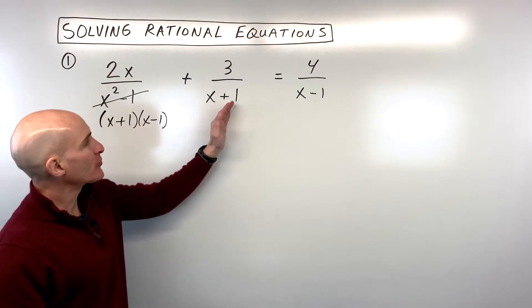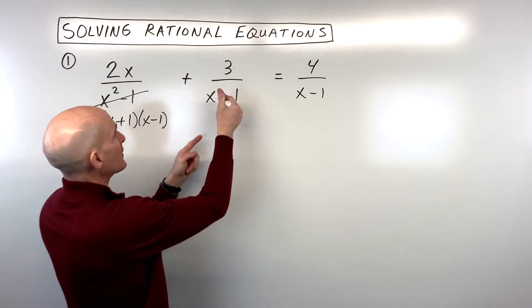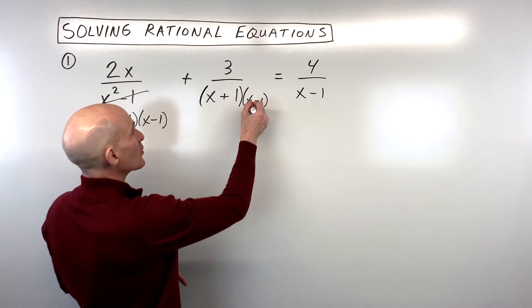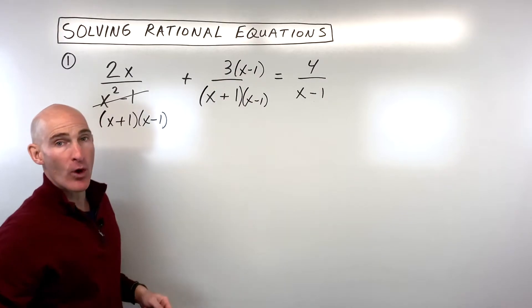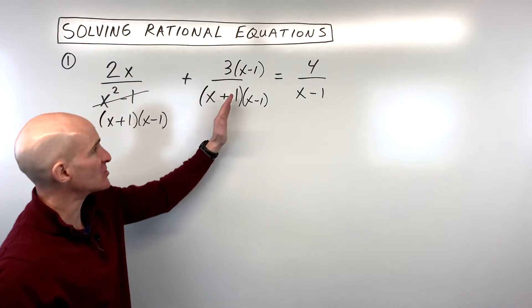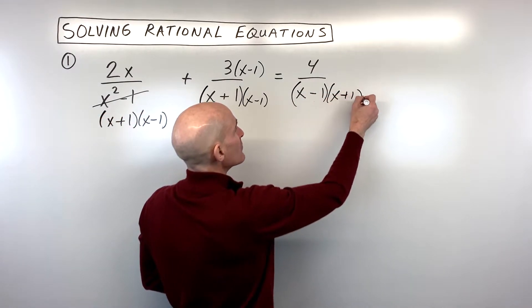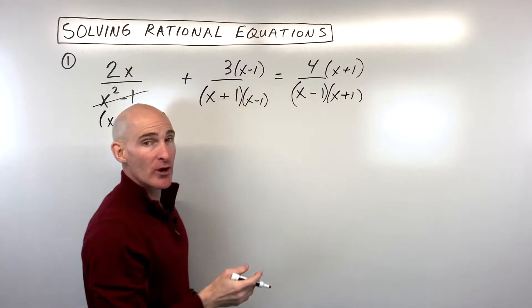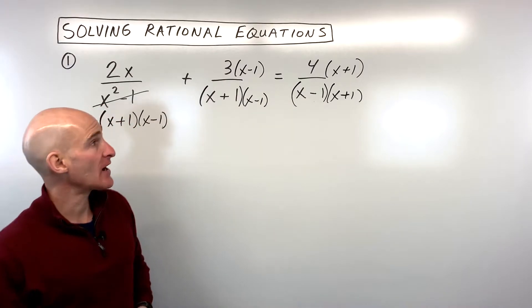When I look at all three of these fractions, I can see that this fraction has a denominator of x plus 1, x minus 1. This one only has an x plus 1 — it really needs an x minus 1. So whatever I do to the denominator, I also have to do to the numerator, because that's like multiplying by 1, which doesn't change the fraction, just changes the way it looks. And this one over here, x minus 1, we really need another x plus 1. If I multiply the denominator by x plus 1, I want to do that to the numerator as well. Now you can see that we have a common denominator for all three of these fractions.